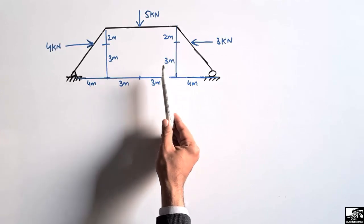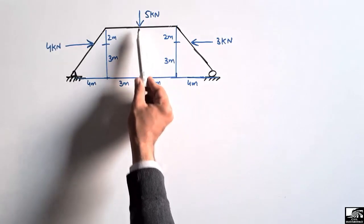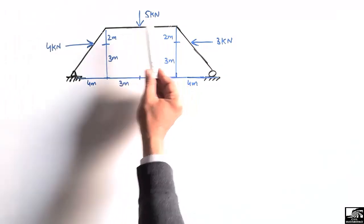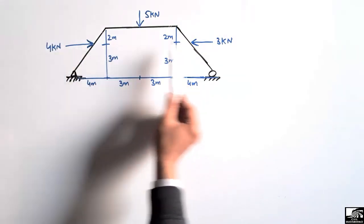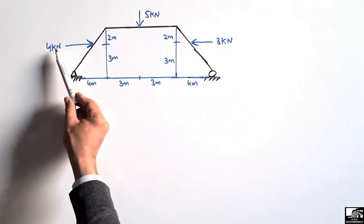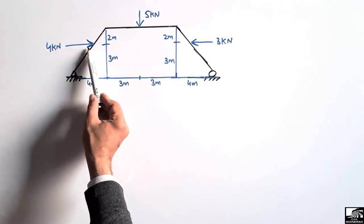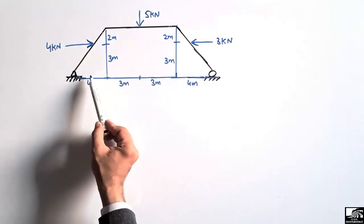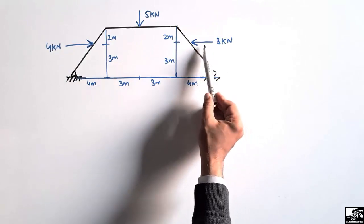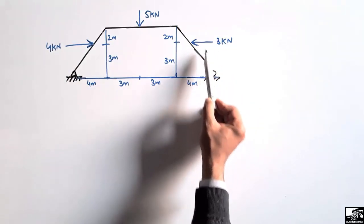This frame has been loaded with three point loads. One load is acting vertically at the middle of this beam, which is 5 kilo Newton. The other loads are horizontal lateral loads acting on the members of this frame. One load is 4 kilo Newton acting at a distance of 3 meters from the hinge support, and the other load is 3 kilo Newton acting at a distance of 3 meters from the roller support.